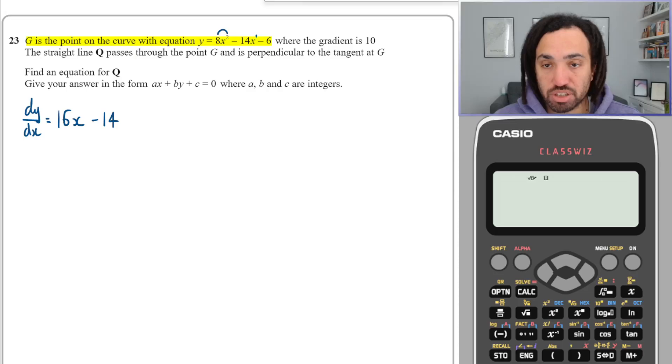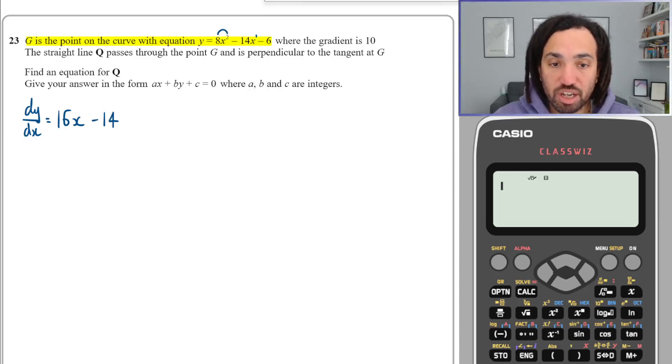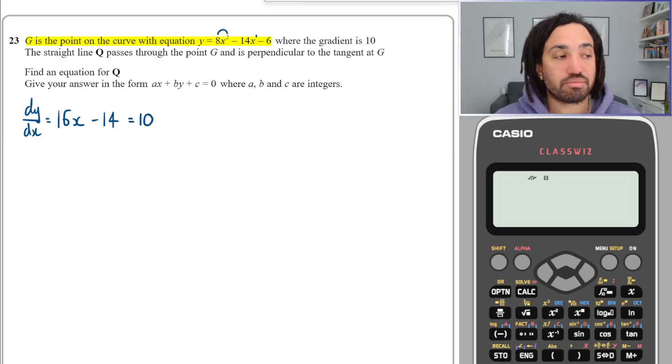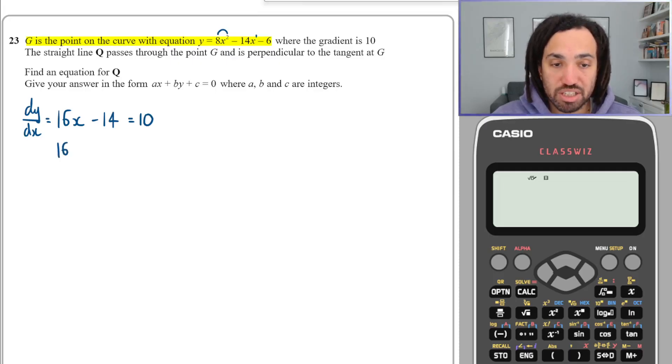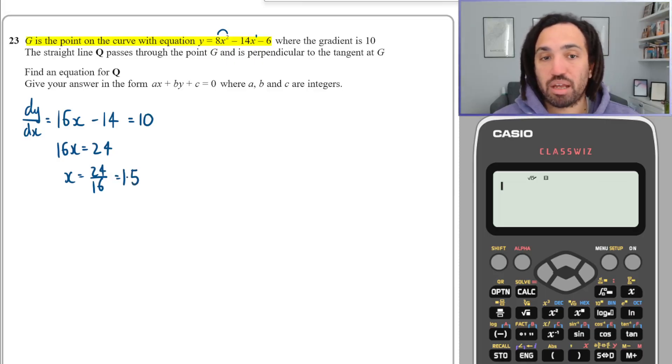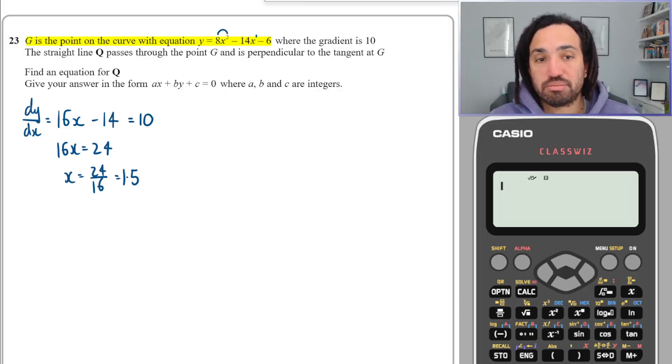So there we go, that's the gradient function for the curve, and we want to find when this is equal to 10. Solving this, I'm going to get 16x = 24, which means that x = 24/16, which means that x = 1.5. Lovely.